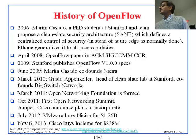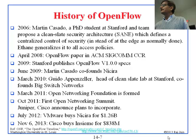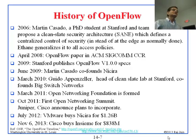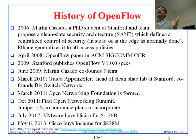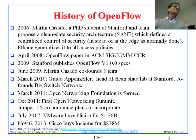In July 2012, VMware bought Nicera for $1.26 billion. And as of November 6, 2013, Cisco bought Insignia for $838 million — a startup in this space. This is a hot area: if you are in Silicon Valley working on networking, you are working on SDN.